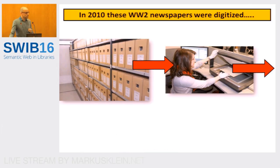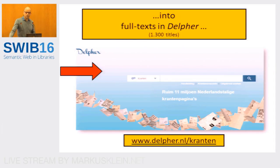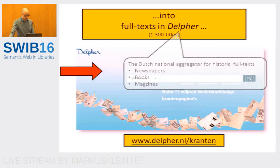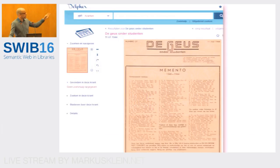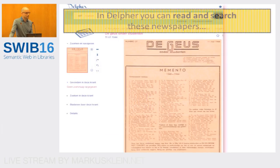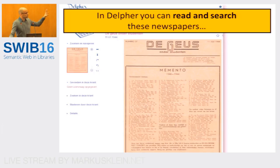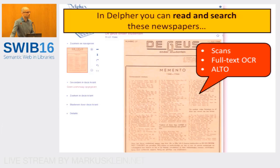Six years ago, all 200,000 pages were digitized and are now available on a website called Delpher — our Dutch national aggregator for historic full-text publications. So not only these illegal newspapers, but also other newspapers, books, and magazines. All 1,300 titles are available there, including De Geus onder Studenten. You can read the newspaper and also search it at the word level because there is full-text OCR and also ALTO files for word highlighting.